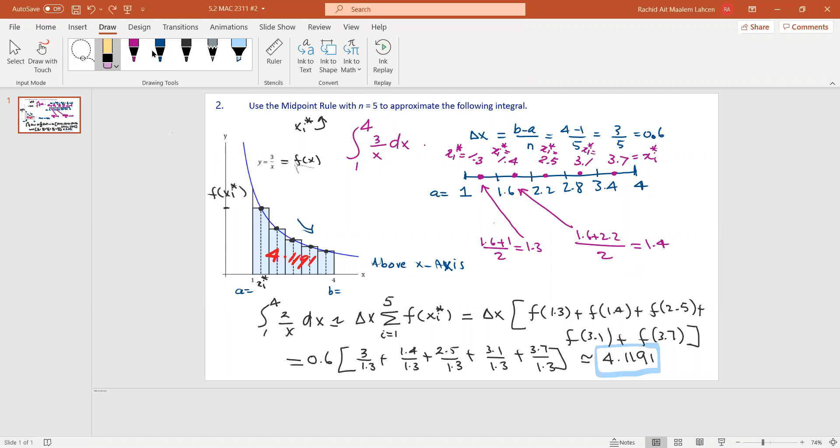The integral is given here, and we have this graph for the visual. The formula is that this definite integral is going to be equal to delta x times the sum of f(xi*), where the star is the sample point. The sample point here is the midpoint.